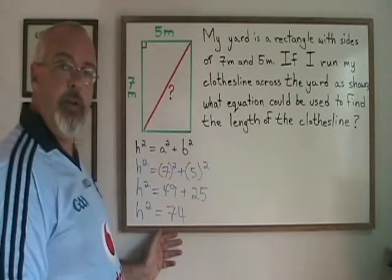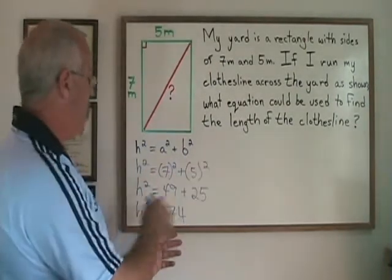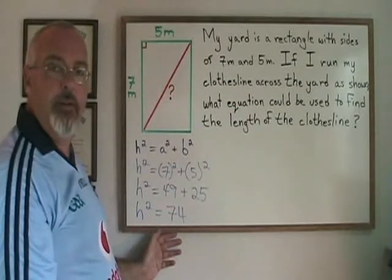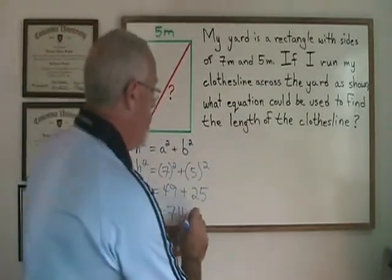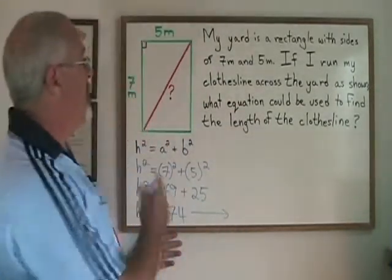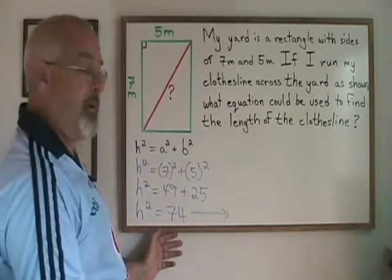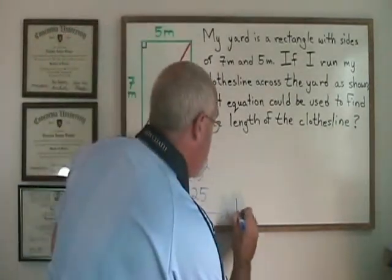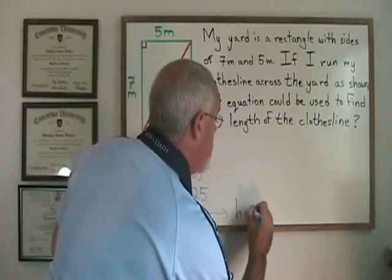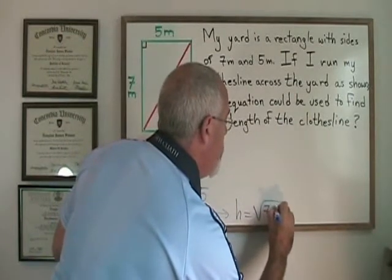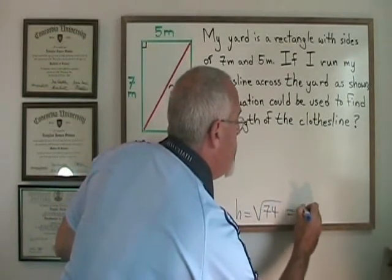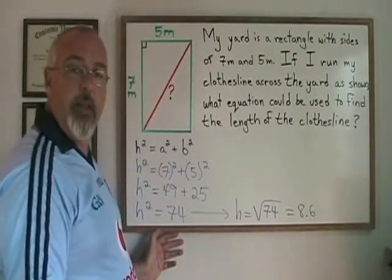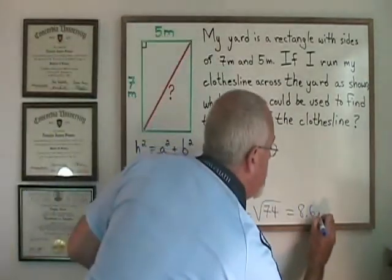I am not finished yet, because I am not being asked what h squared is equal to. I am being asked what h is equal to — the hypotenuse, or the length of the clothesline. So if h squared is equal to 74, then h will be equal to the square root of 74, which is 8.6 if I round to the nearest tenth, and the unit is meters.